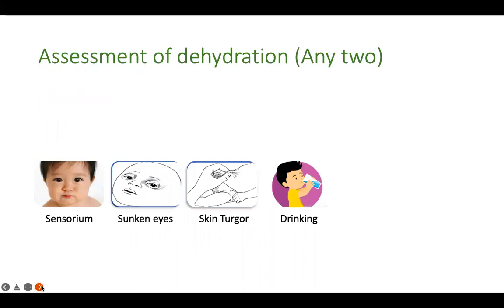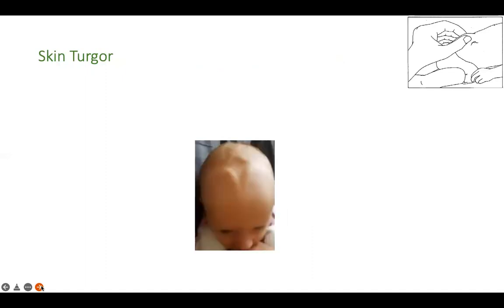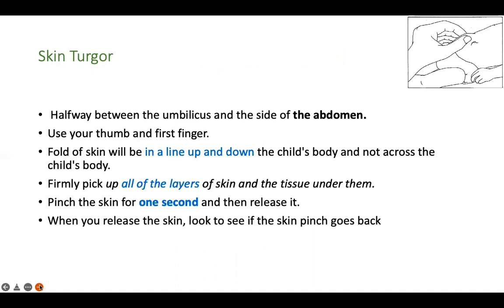How do you assess dehydration? The four cardinal signs are sensorium, eyes, skin turgor, and the way the baby is drinking. Skin turgor must be examined on the abdomen. In a small infant you can also look at the anterior fontanelle — a depressed fontanelle is a sign of dehydration. Look for skin turgor midway between the umbilicus and lateral abdomen, pinching in the vertical direction — the long axis of the baby — for just one second, lifting up the skin and the tissue beneath it, then releasing.